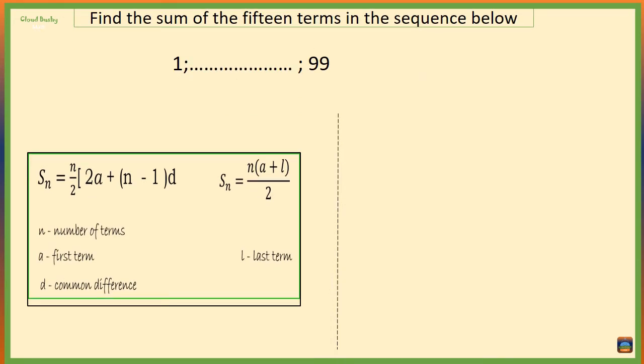Now let's consider a sequence with 15 terms that starts with 1 and the last term is 99. We know the first term and the last term for this sequence, so we are going to use the second formula.